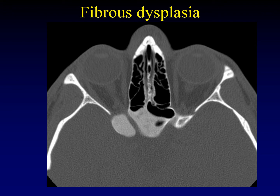Another thing to remember about fibrous dysplasia is that it doesn't always look like a ground glass opacification. There are three radiologic forms: ground glass is the most common, but there is also a cystic form and a pagetoid form of fibrous dysplasia. The cystic form has large cystic areas without density, and the pagetoid form looks like Paget's disease. These are often intermixed in single lesions that have any or all of these radiologic forms in combination.